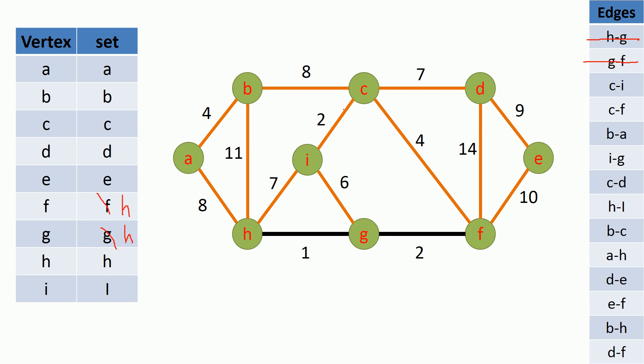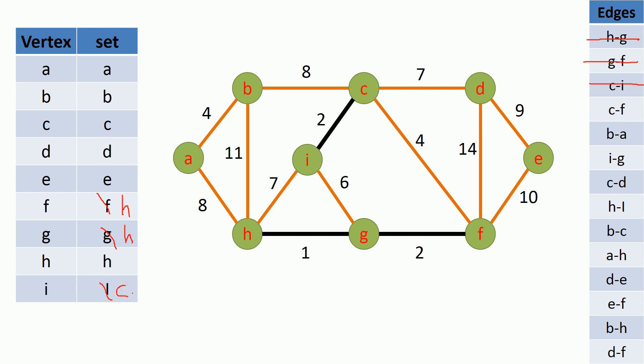The next edge to consider is the edge between C and I vertices. C is currently on set C and I vertex is currently on set I. So these two vertices belong to two different sets, therefore we can add the edge between C and I vertices to our MST. Then I am going to union the sets by changing I vertex set to C. Now both I and C vertices belong to set C.